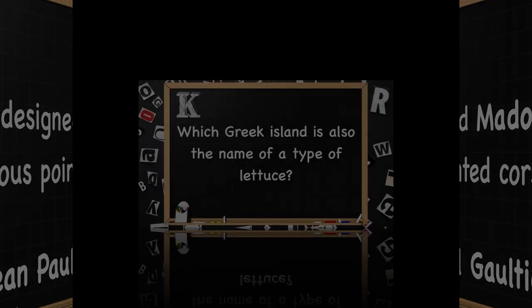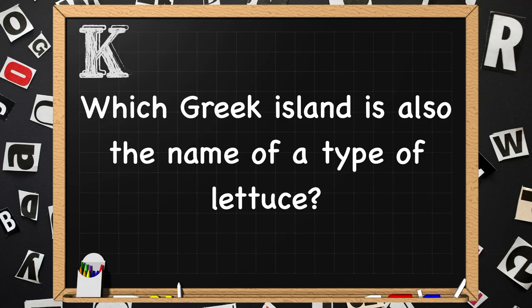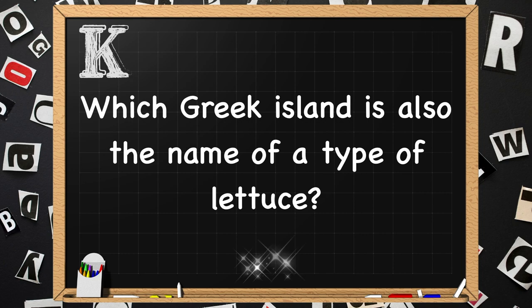Beginning with K. Which Greek island is also the name of a type of lettuce? I know the spelling is different — they just share the same name. The answer is Kos.